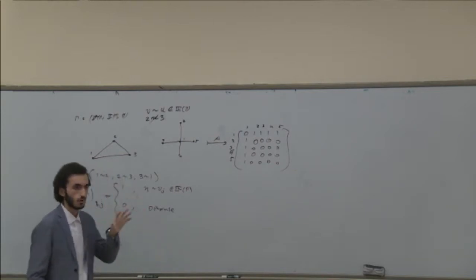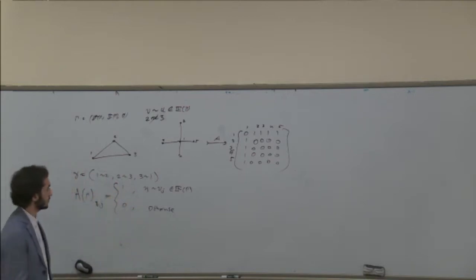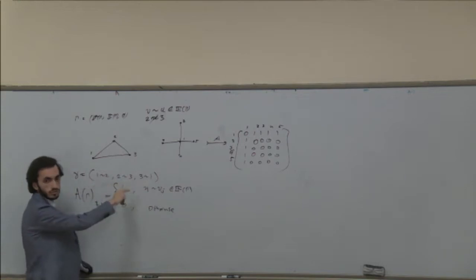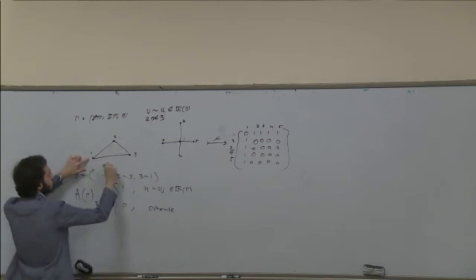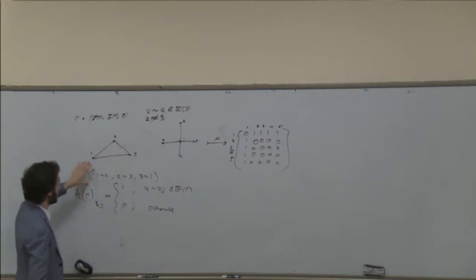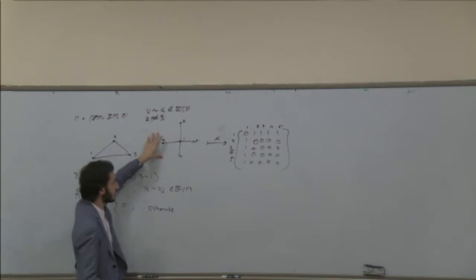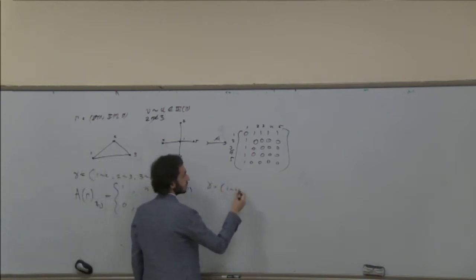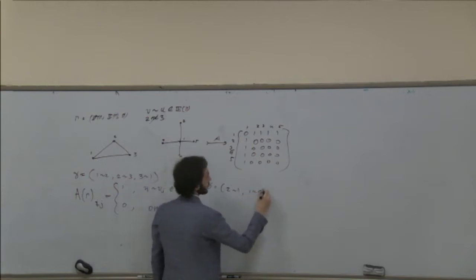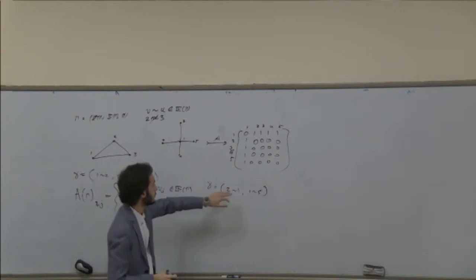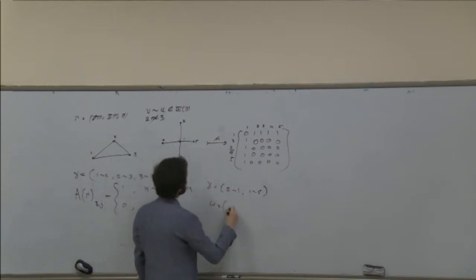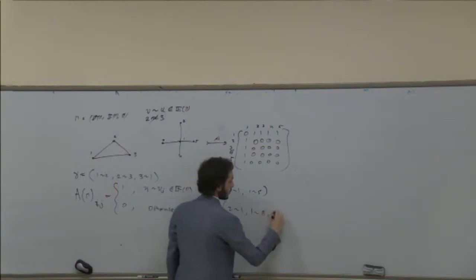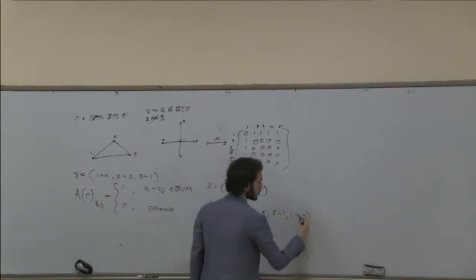Now I define what a walk is. A walk is very similar to a path but with fewer restrictions — you can have as many duplicate edges as you want. There's no problem going from one to two, back to one, to three, and back. For example, a walk can go two to one, one to five, five to one, and one to four — that's completely fine, whereas a path cannot revisit vertices.